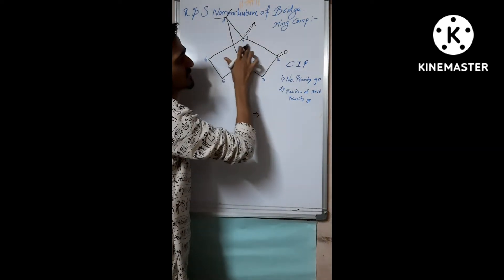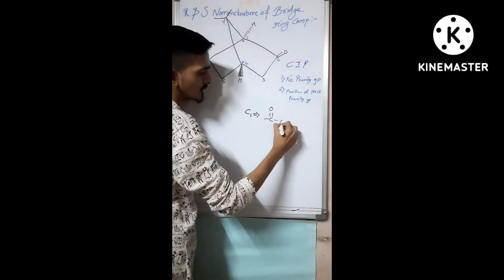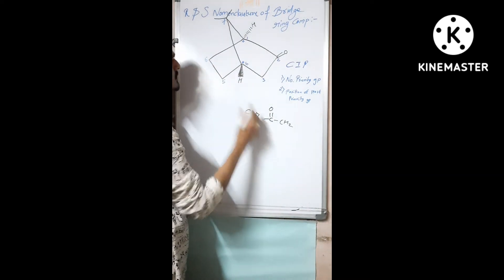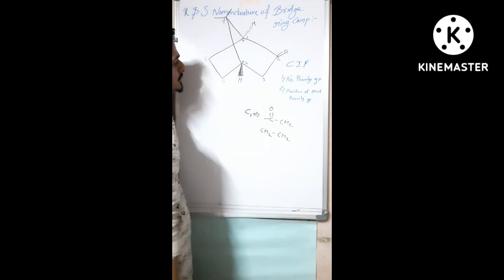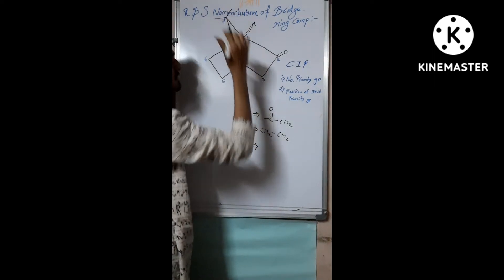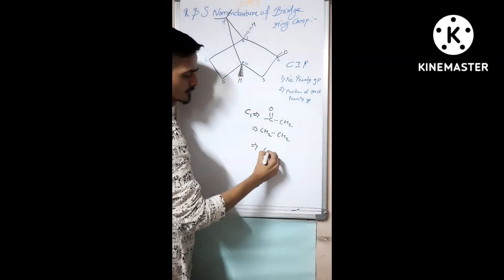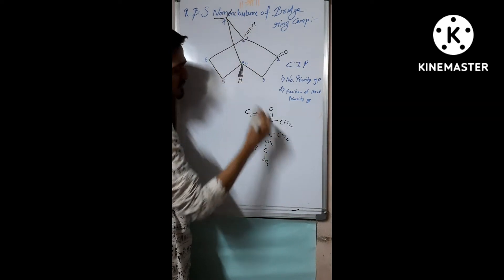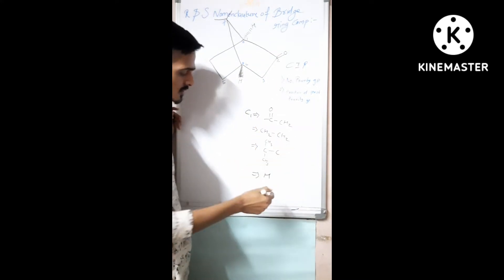This carbon has a carbonyl group — C double bond O — as one attachment. It is also attached to CH2 as the second attachment at carbon number six. The third attachment is a carbon with two methyl groups, CH3 and CH3. Finally, the fourth attachment is hydrogen.